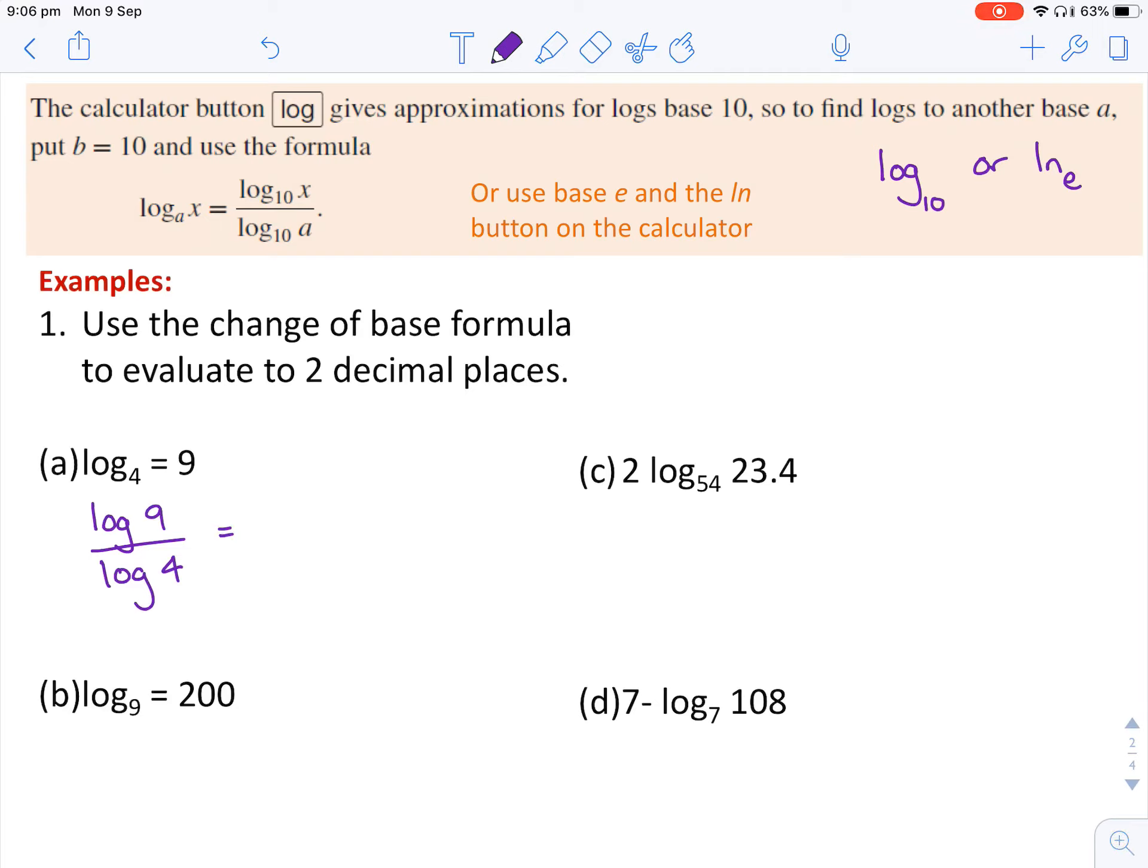And typing that in exactly the same way should give you 1.584962, etc. This question has asked for two decimal places. So that's 1.58.